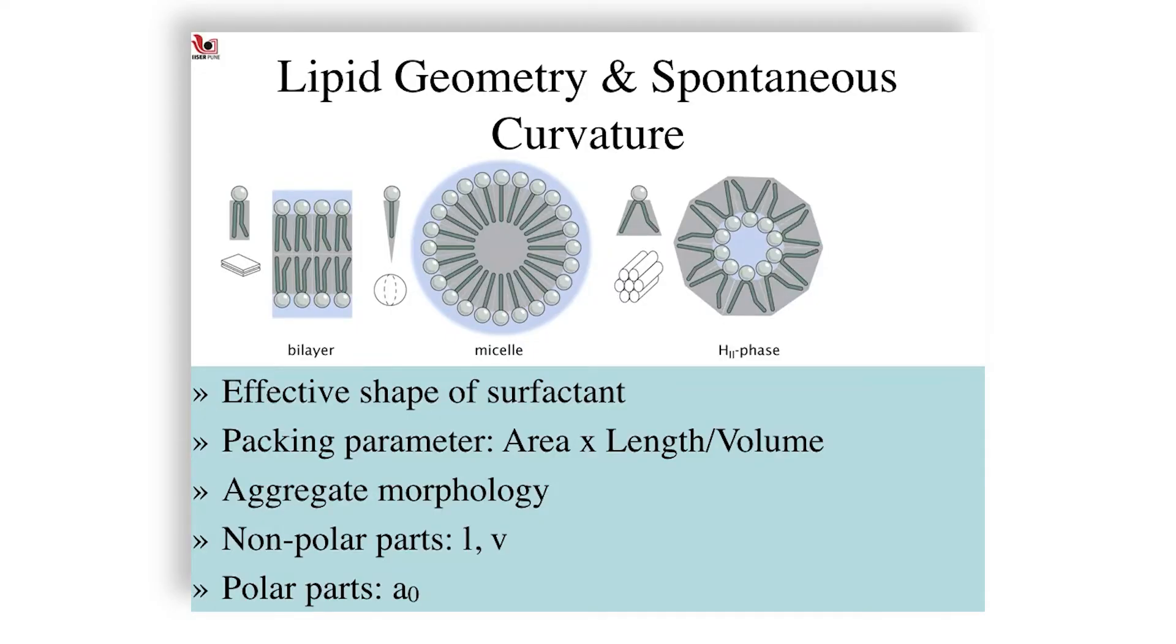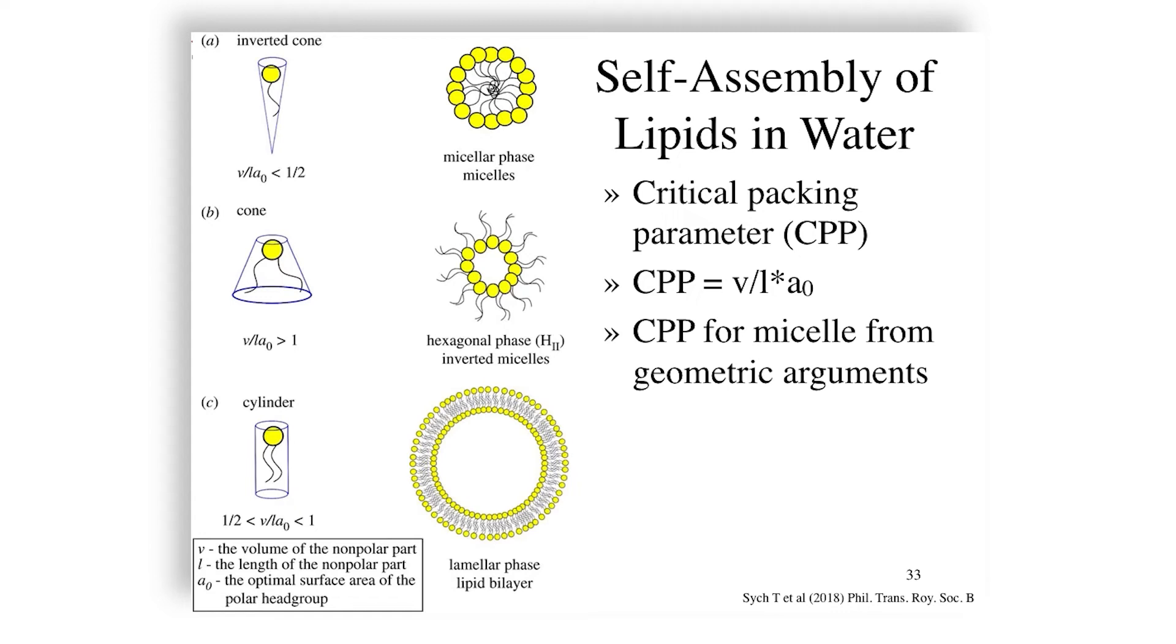Hi, welcome back. Last time we spoke about lipid geometry and spontaneous curvature, and we discussed the various shapes of the lipids that can give rise to different shapes of membranes. In other words, how the molecular component shapes and geometry can affect the microscopic lipid assembly, and we talked about the so-called critical packing parameter.